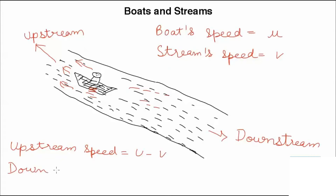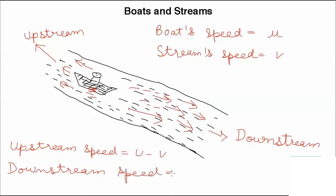Similarly, if a person is going along with the speed of stream, we should add the speed of stream to the boat speed. So the downstream speed becomes U plus V.